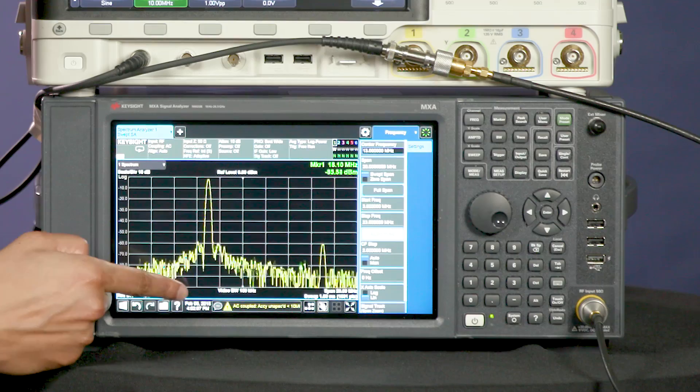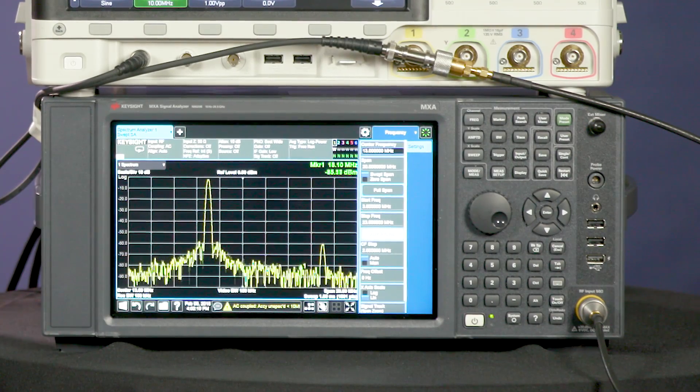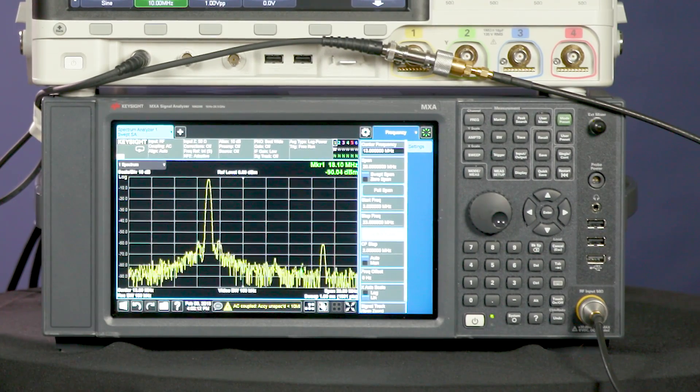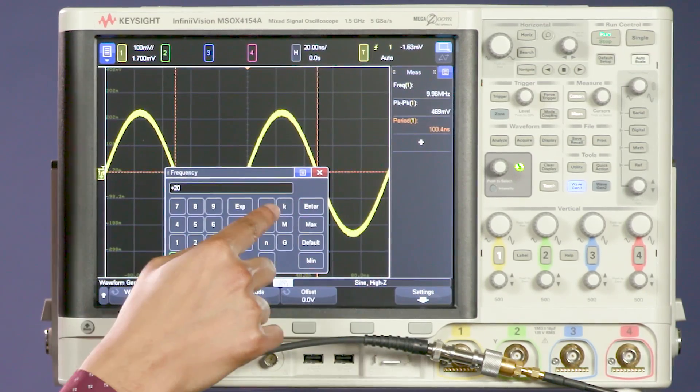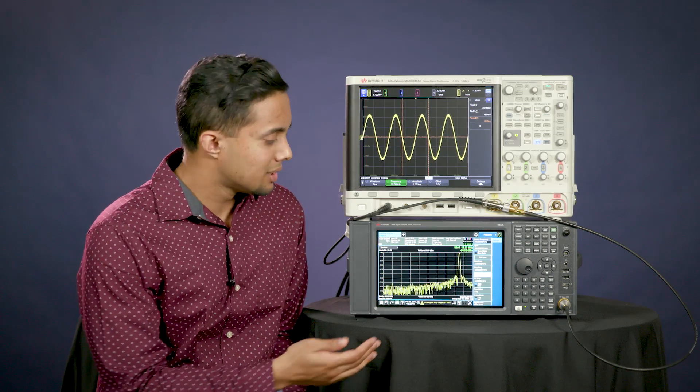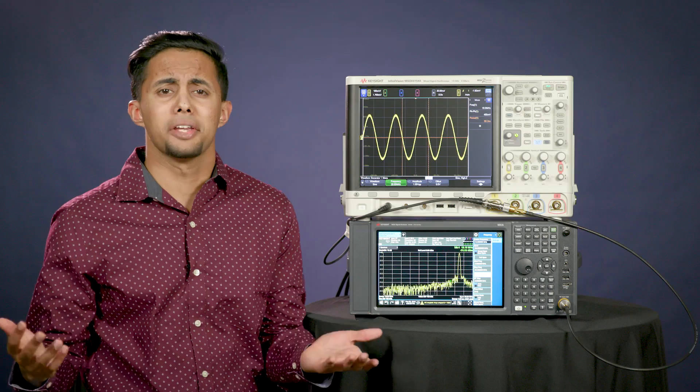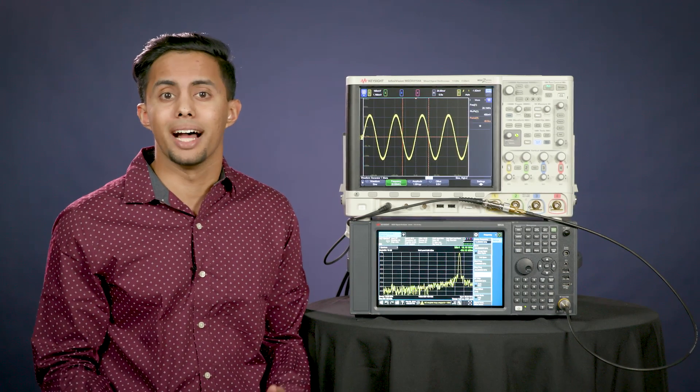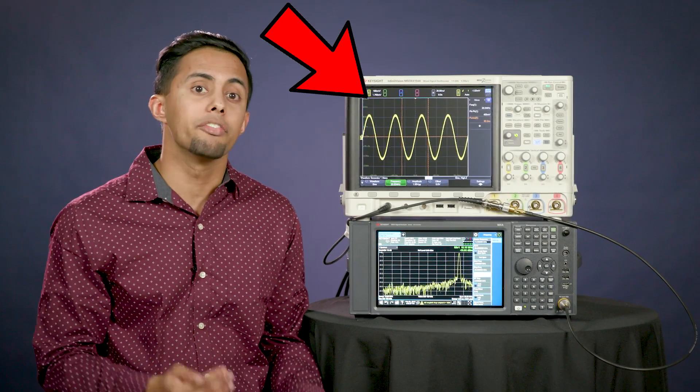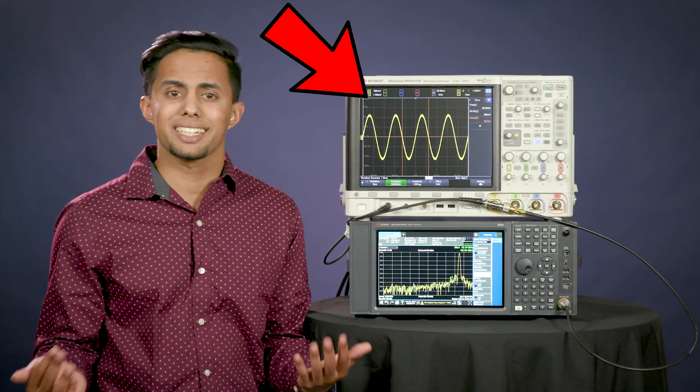Just a single peak at 10 megahertz and if we were to output the waveform generator to be a 20 megahertz signal, then it would be a peak that appears at 20 megahertz. So yeah in the time domain signals appear as sinusoidal waves and in the frequency domain they appear as distinct impulses.